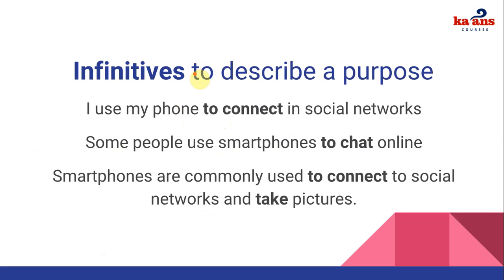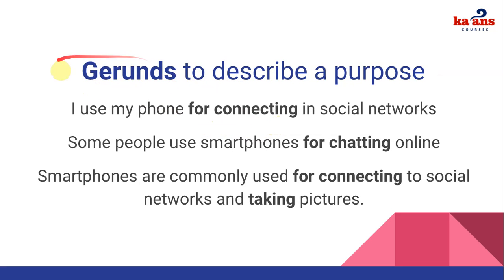As I mentioned in the last lesson, it's important to check the difference: for infinitives we have 'to' and the verb in the base form — for example, 'to connect' — and for gerunds we have 'for' and the -ing form, like 'for connecting.' That's the first difference and it's important to consider this.